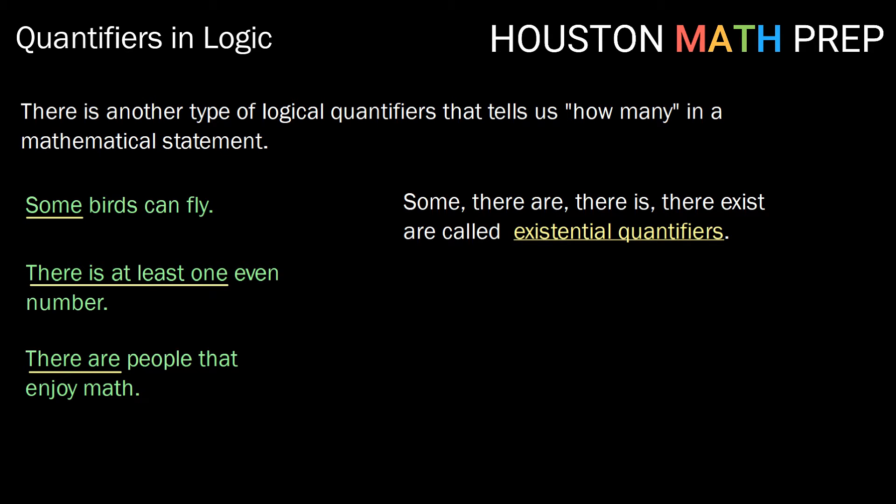So these quantifiers are what we call existential quantifiers. You can think of that as it tells us that at least some exist. So some, there are, there is, there exist, there is at least one. All of those are existential quantifiers. The symbol for that looks like a backwards capital E, and it stands for there exists, or there is, or any of these.